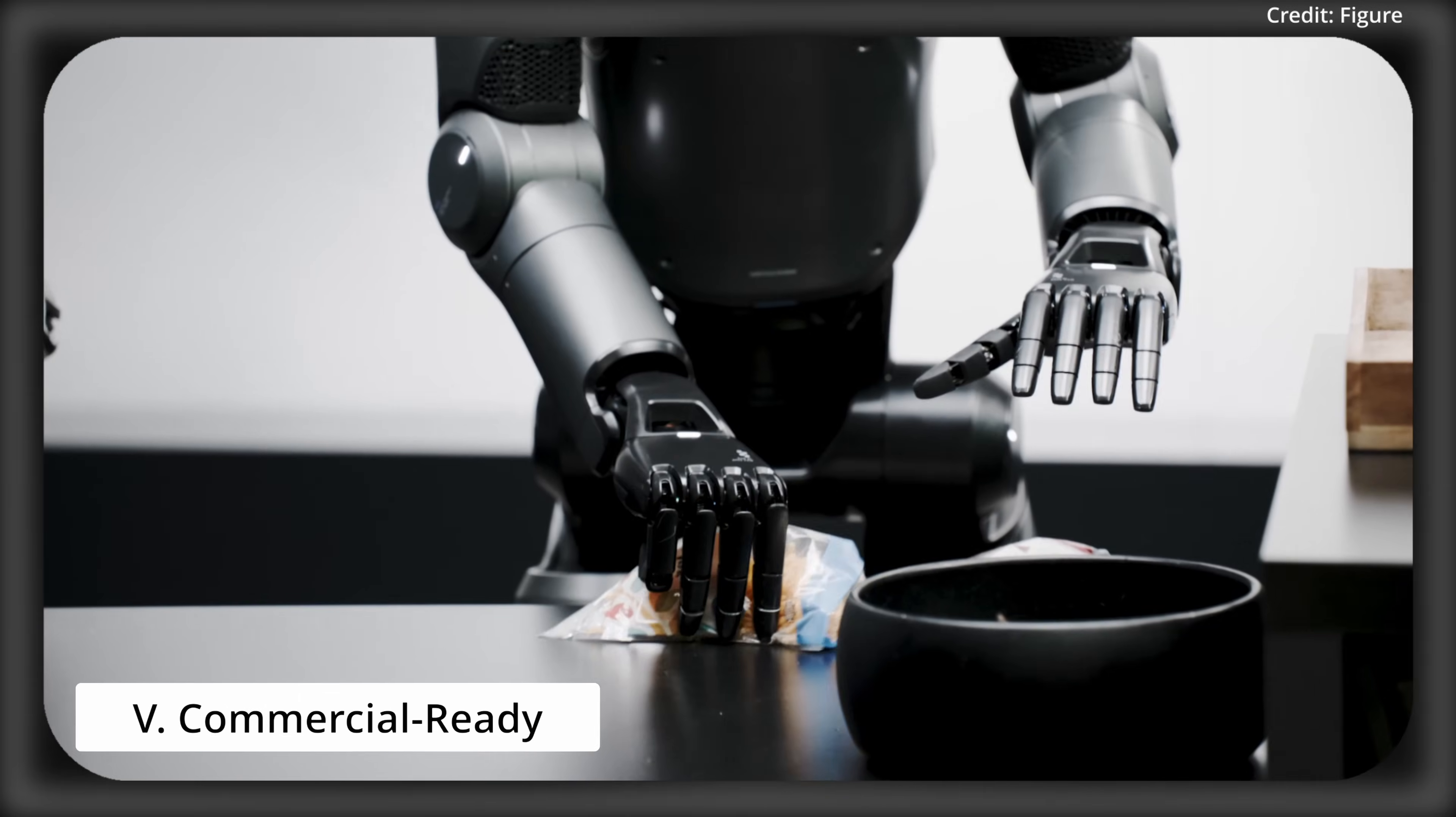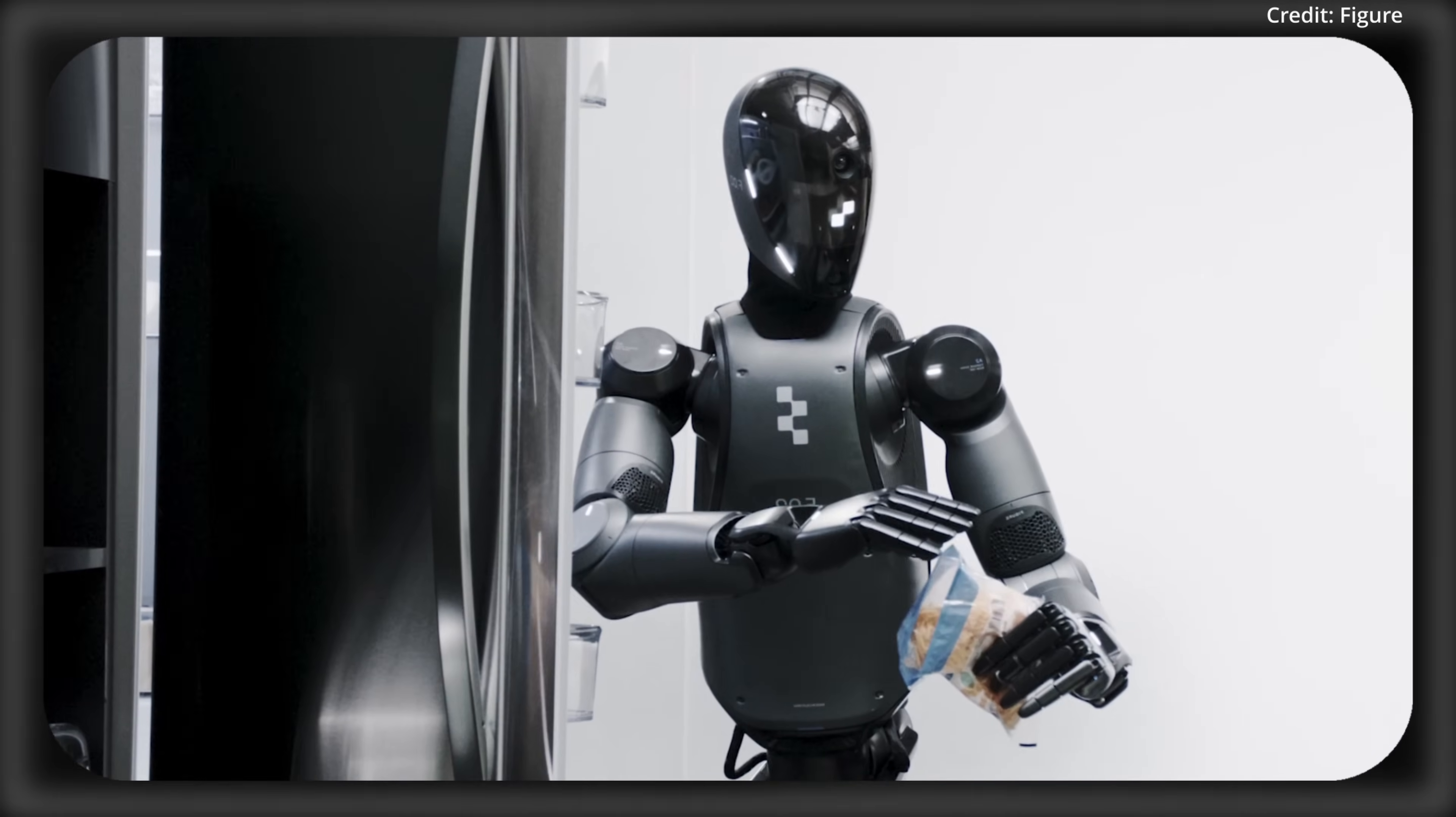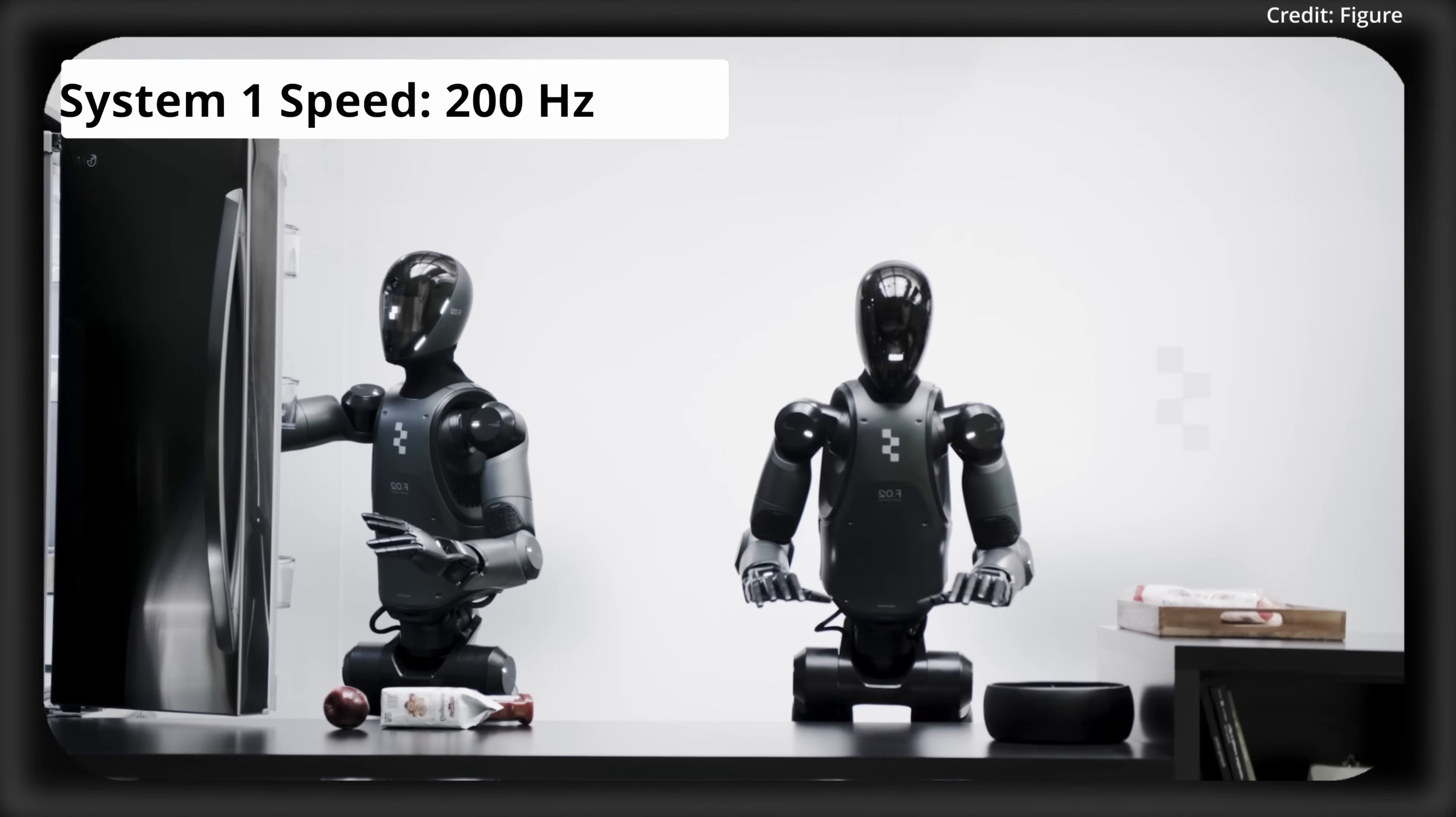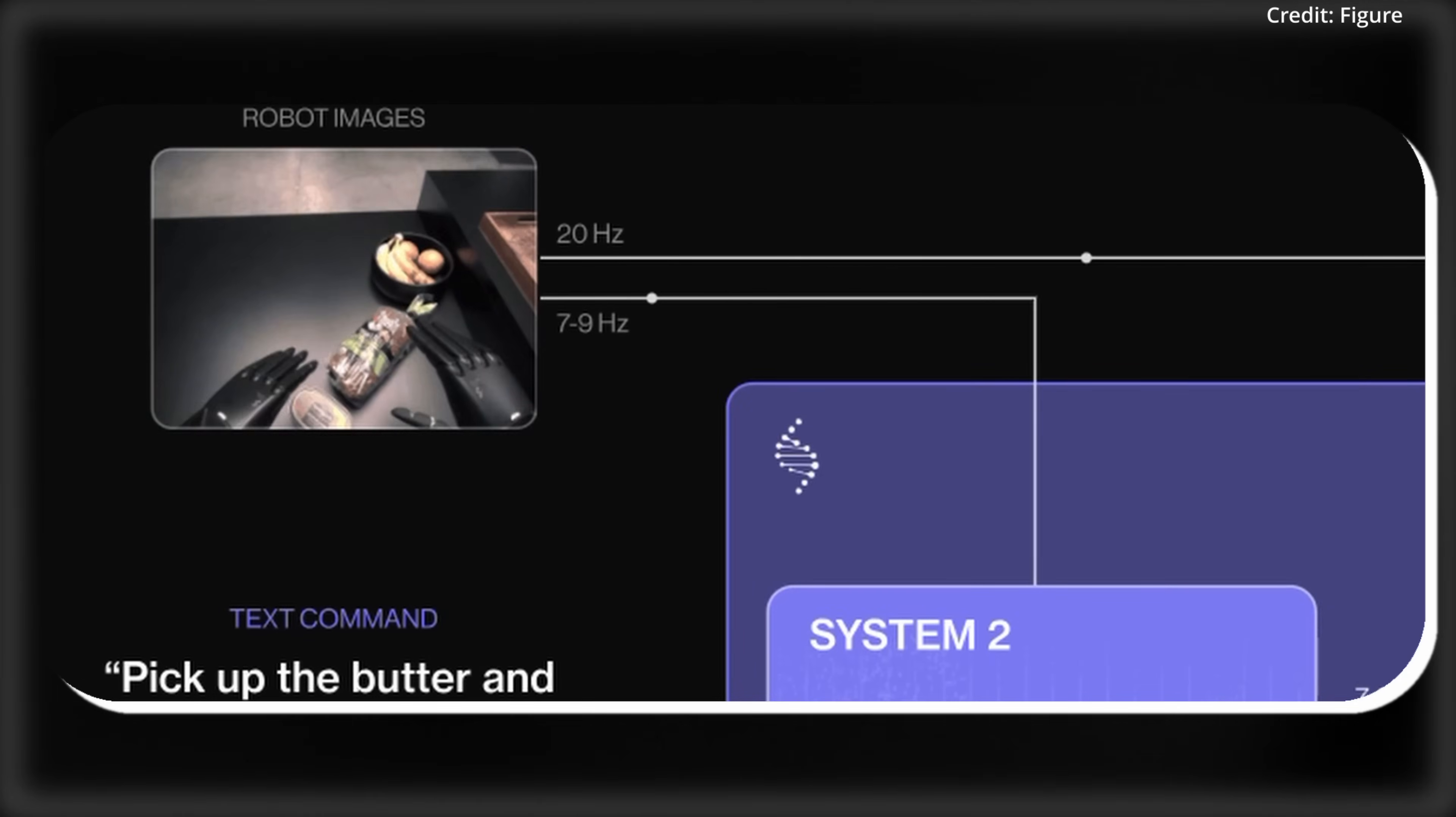And that brings us to tech breakthrough number five: Commercial Readiness. Helix is the first VLA fully operational on Figure robots' embedded low-power GPUs, ready for commercial action today. Its dual-system setup uses the robot System 2 at 7 to 9 Hz for big-picture thinking, and its System 1 at 200 Hz for instant action, splitting the work across dual GPUs to ensure seamless performance.